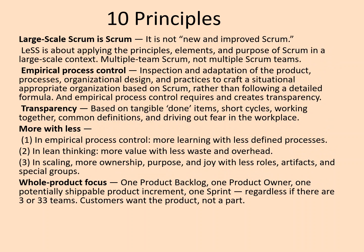So what are the 10 principles of LeSS? The first principle is that large-scale scrum is actually scrum — it is not new and improved scrum. LeSS is about applying the principles, elements, and purpose of scrum in a large-scale context. The second principle is empirical process control — inspect and adapt the product using the same empirical processes as in scrum. The third principle is transparency, based on tangible done items, short cycles, and working to a common definition of done.